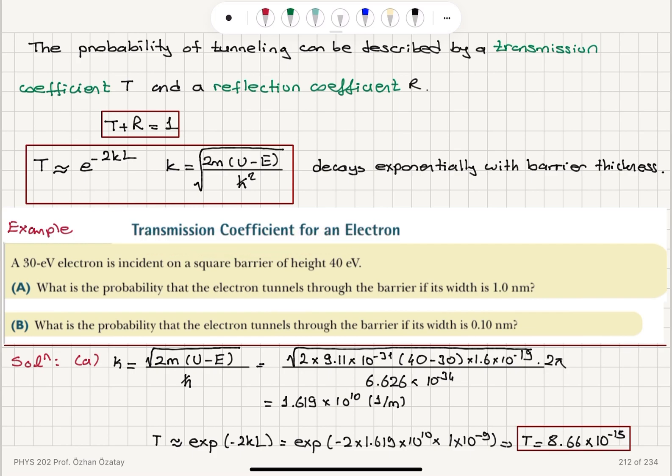We've seen an example where we calculated the transmission coefficient for an electron incident on a 40 electron volt square barrier with width either 1 or 0.1 nanometers. The electron energy is 30 eV. First we calculated k, the wave vector magnitude, using square root of 2m(U-E) divided by h-bar, then substituted into the exponential formula.